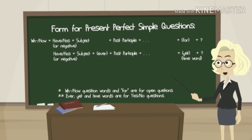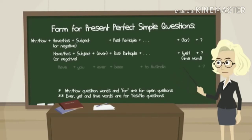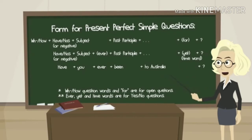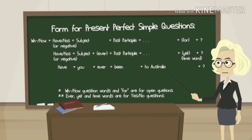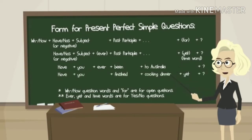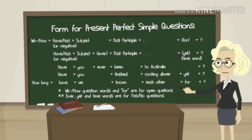'Ever', 'yet', and time words are for yes/no questions. Let's have a look at some examples. 'Have you been to Australia?' — we start the question with 'have', plus the subject 'you', plus 'ever', plus the past participle 'been', plus 'to Australia'. 'Have you finished cooking dinner yet?' — here we used 'yet'. 'How long have we known each other for?' — here we began the question with 'how long' and ended it with 'for'.